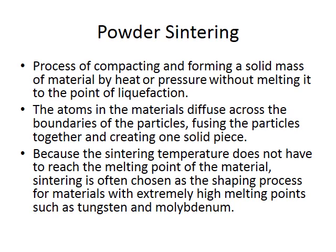Powder sintering is the process of compacting and forming a solid mass of material by heat or pressure without melting it to the point of liquefaction. You melt it enough that the powder particles fuse with each other, but not so much that it liquefies. The atoms in the material diffuse across the boundaries of the particles and fuse them together into one solid piece. Because the sintering temperature does not have to reach the melting point, sintering is often used for materials with a very high melting point, such as tungsten and molybdenum.